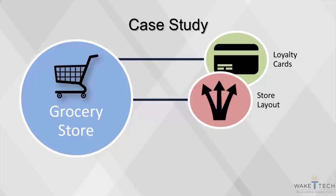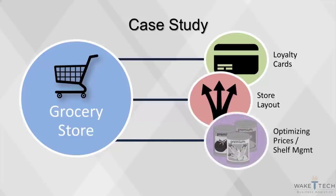Each shelf is also analyzed to find the ideal arrangement. More expensive items are typically placed at or around eye level, while cheaper products will be on the top or bottom shelves. Optimizing prices is another analytical technique used to maximize customer spending. Many grocery stores will have what are called loss leaders — products that are very cheap to draw customers into the store where they will inevitably spend more on other overpriced items. Grocers will also find the ideal times and prices to mark down expiring products, preventing the product from being thrown away at a complete loss.